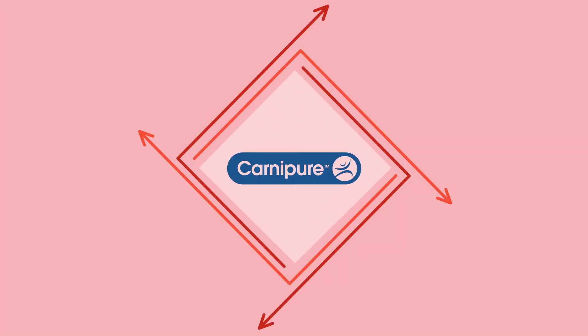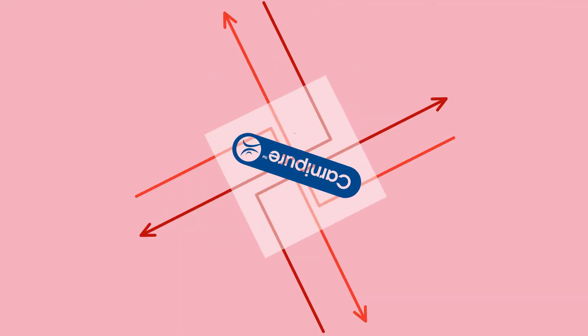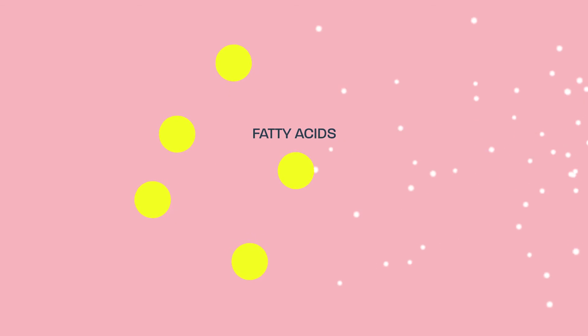It also contains Carnipure, a premium form of L-carnitine. Instead of the body breaking down carbohydrates and sugars, Carnipure transfers the fatty acids to the cells to be used as an energy source.